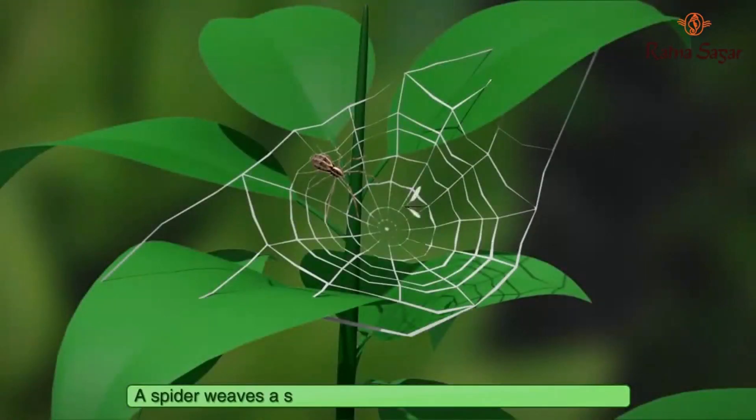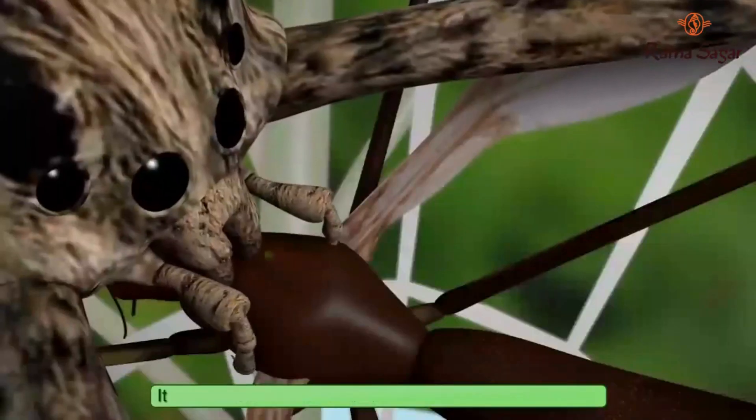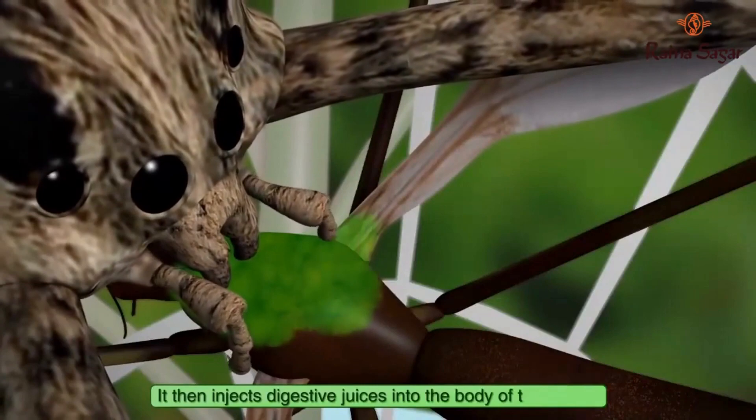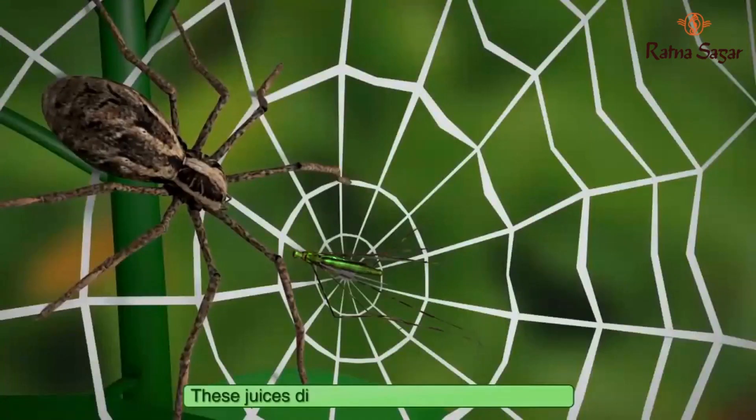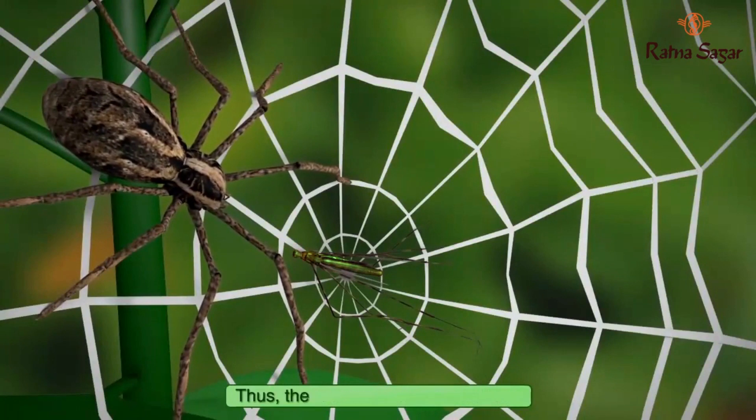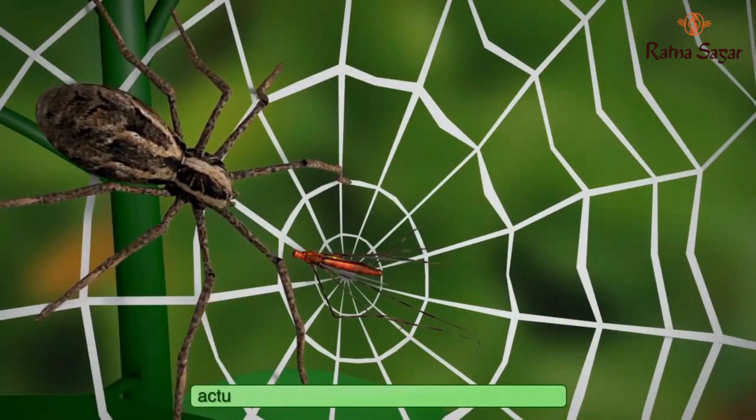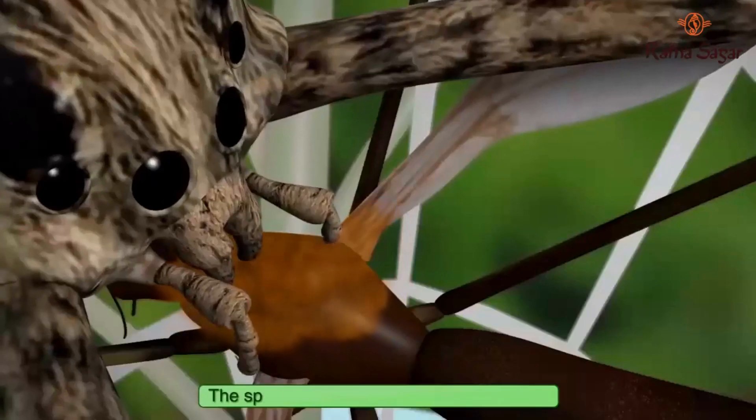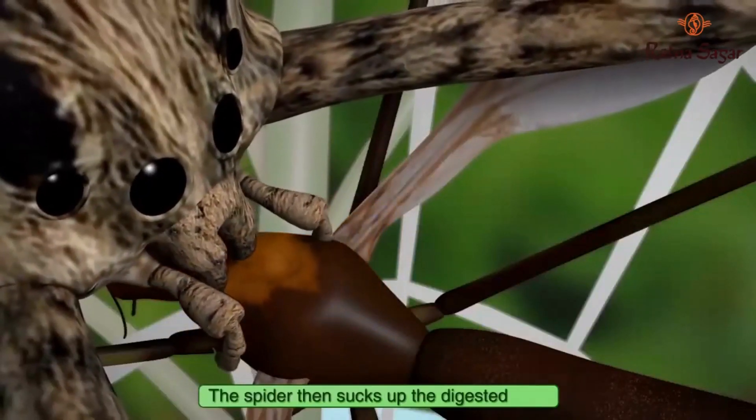A spider weaves a sticky web in which small insects get stuck. It then injects digestive juices into the body of the insect. These juices digest the body parts of the insect. Thus, the digestion of a spider's food actually takes place outside the spider's body. A spider then sucks up the digested food.